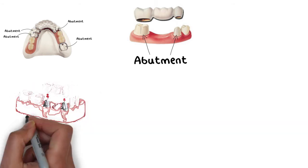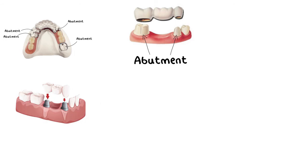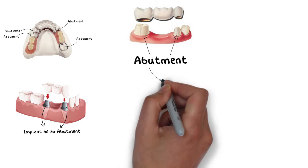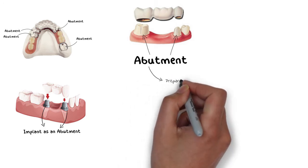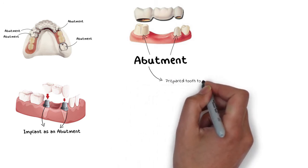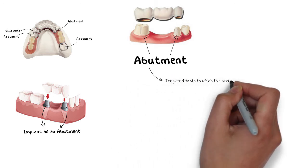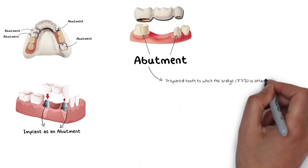Sometimes we also use implants as an abutment in our design. But most often in partial dentures and also in fixed dentures, we use natural teeth for our abutment support. So an abutment is a natural tooth that is prepared to receive the FPD or any other kind of prosthetic appliance.